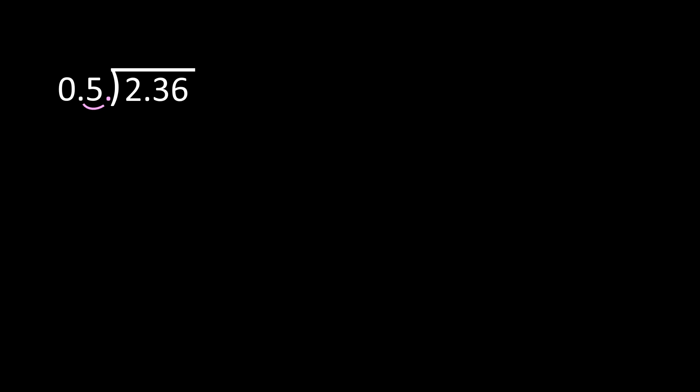If I move the decimal in the divisor, I also need to move it the same number of places in the dividend. So I moved it one place in the divisor, so I'm going to move my decimal one place to the right in my dividend. From here, I recommend that you rewrite your problem so that you can clearly see that now you have 23 and 6 tenths divided by 5.